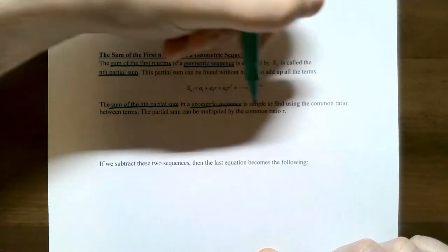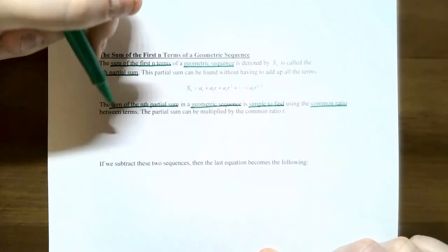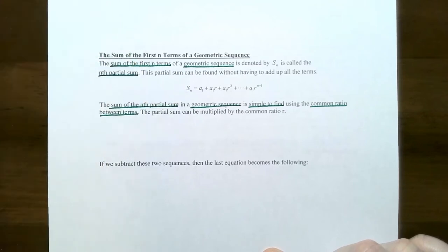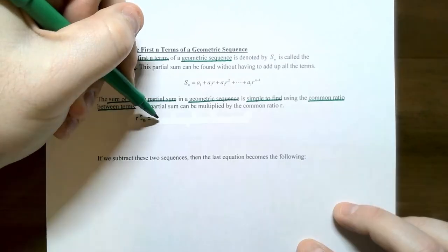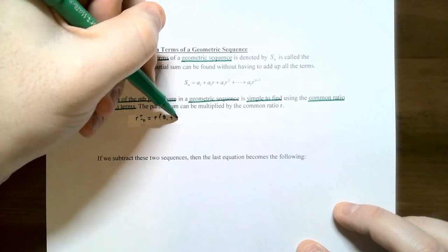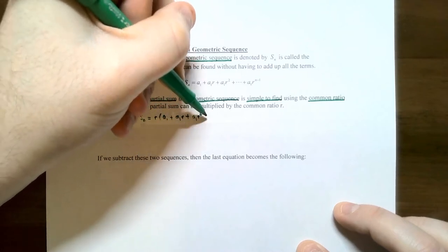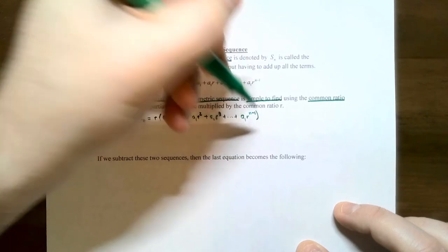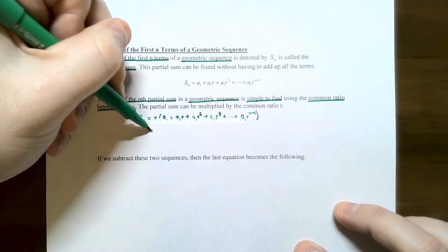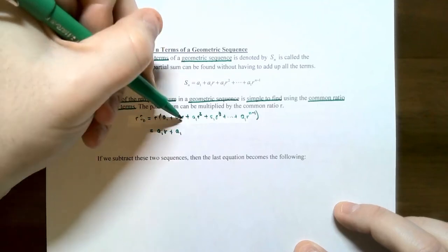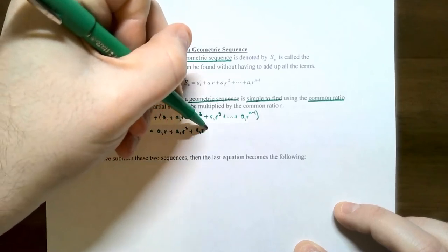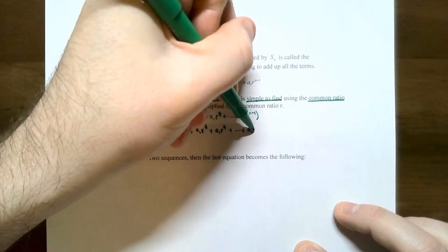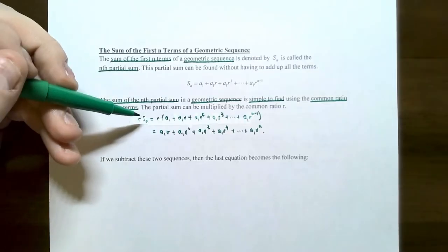The nth partial sum in a geometric sequence is simple to find using the common ratio between the terms. We take the partial sum capital S sub n and multiply every single term by r. So r times S sub n gives us a sub 1 r plus a sub 1 r squared plus a sub 1 r cubed plus a sub 1 r to the fourth, and so on, with the last term being a sub 1 r to the nth power.